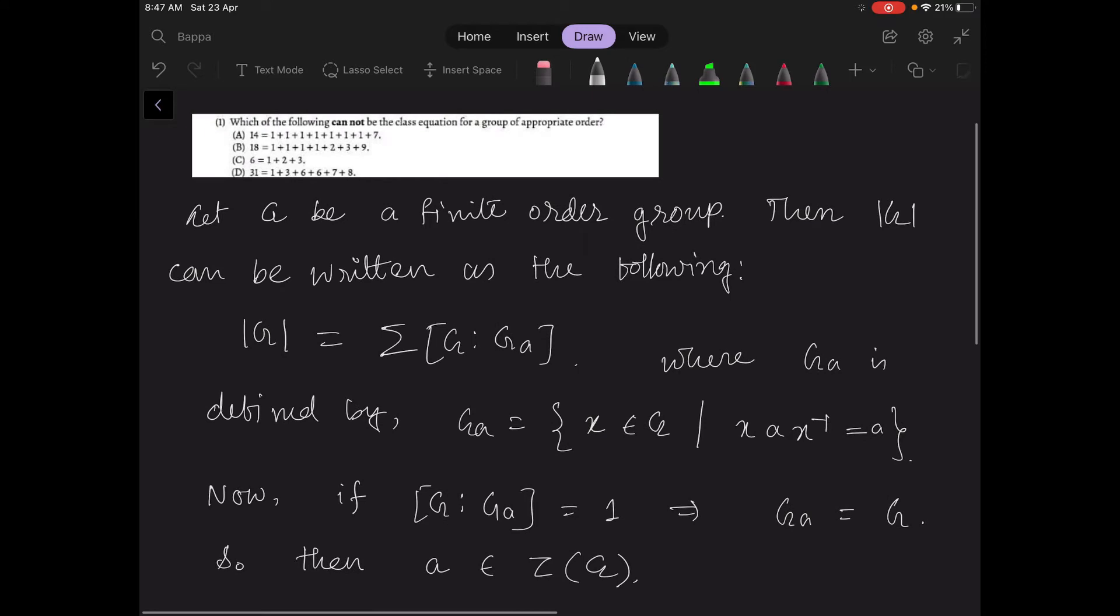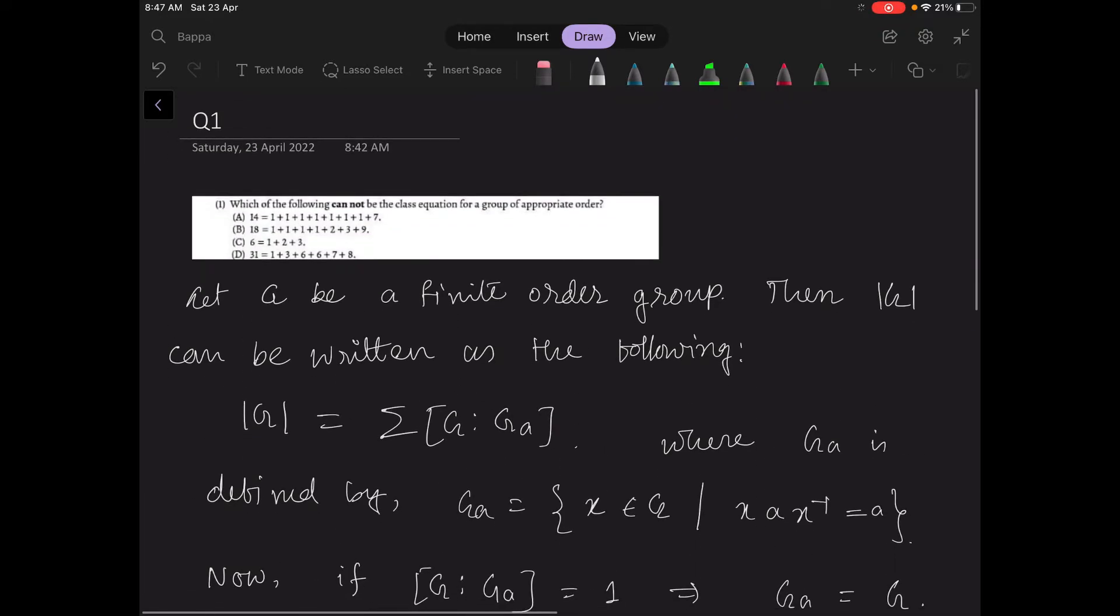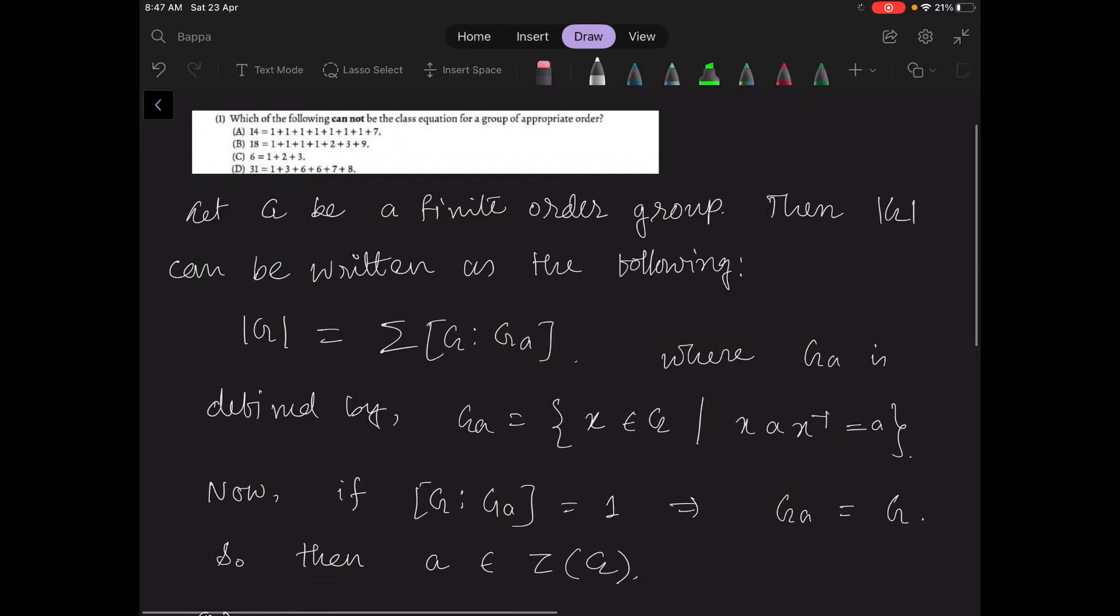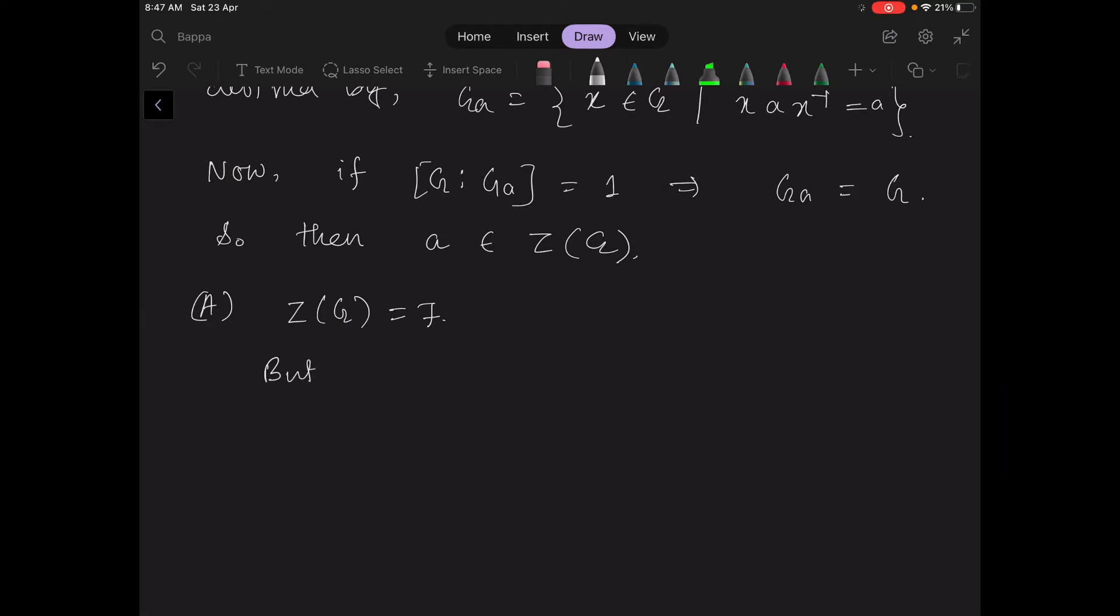Now in this problem, we check option A. So there are seven elements, seven ones, so the order of Z(G) is seven. But if order of Z(G) is seven, then G mod Z(G) is also a group and order of this is equal to seven which is prime. That means G is abelian.